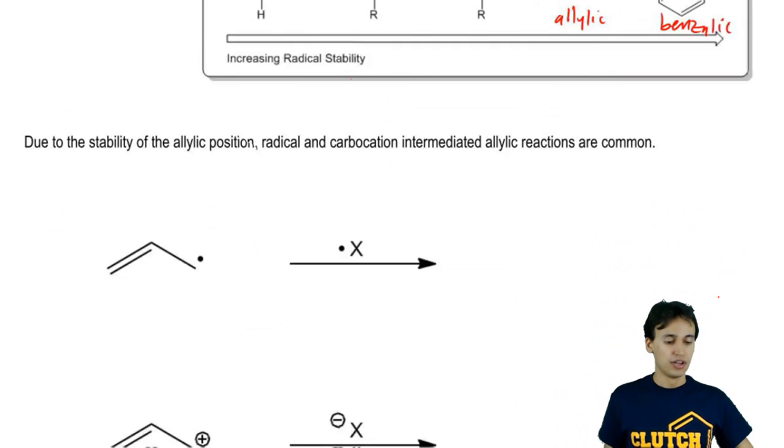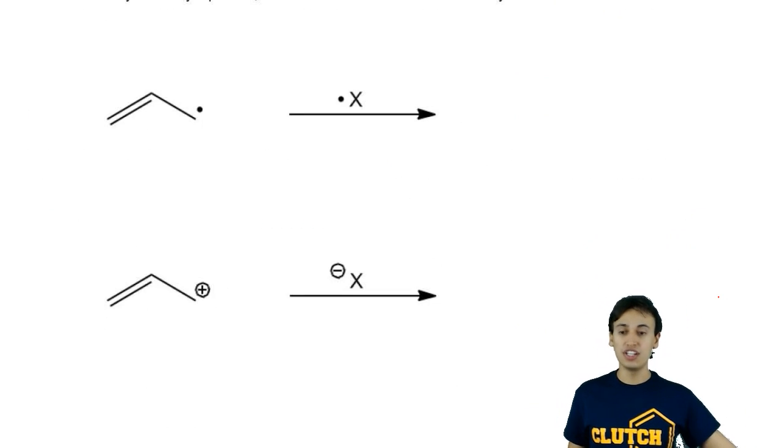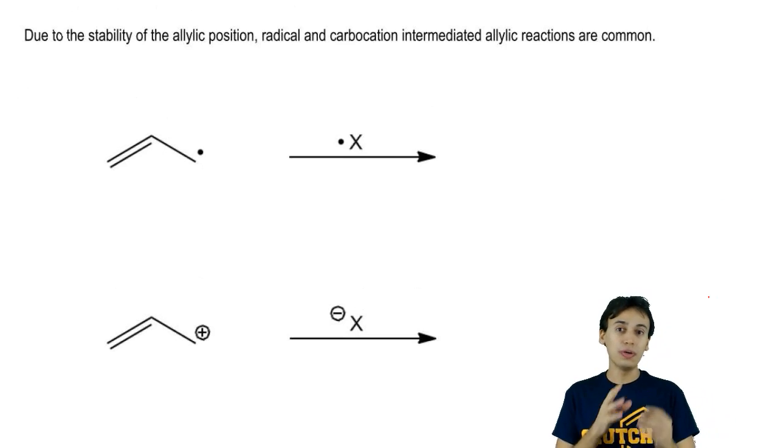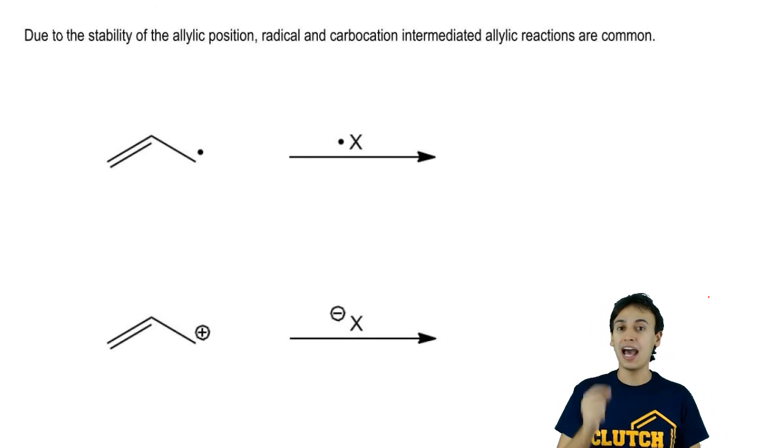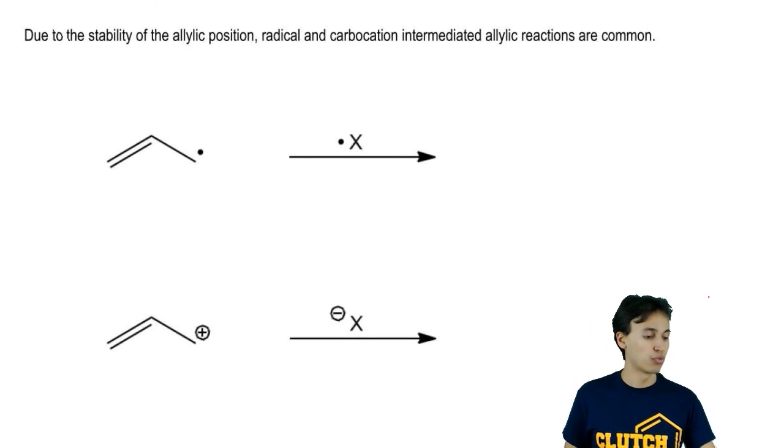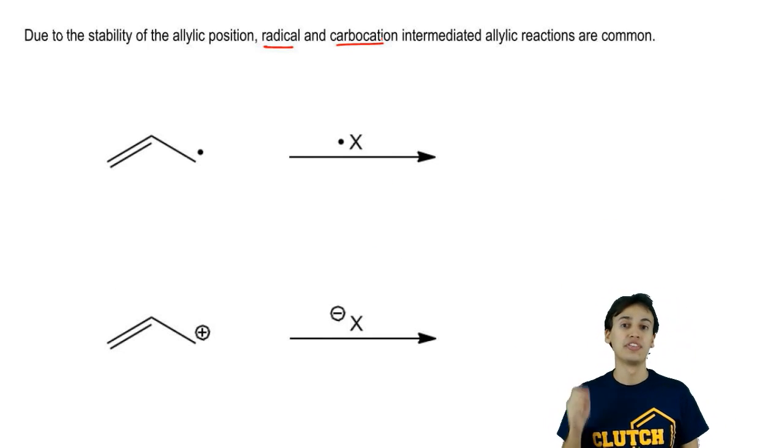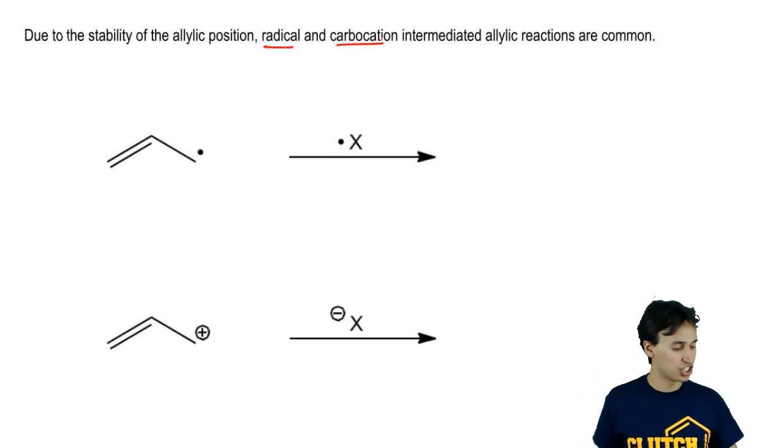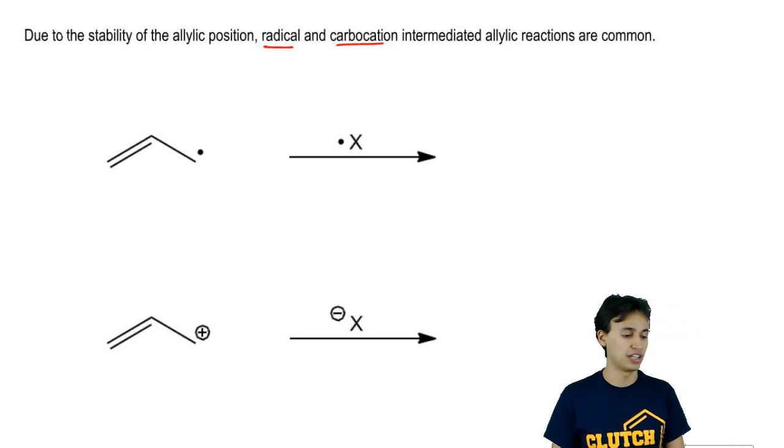That being said, the stability of the allylic position is going to open up reactions to happen at that location that are radical and carbocation intermediated. We're going to see that as a general pattern that these intermediates love to form on that allylic position due to the conjugation that they can achieve.